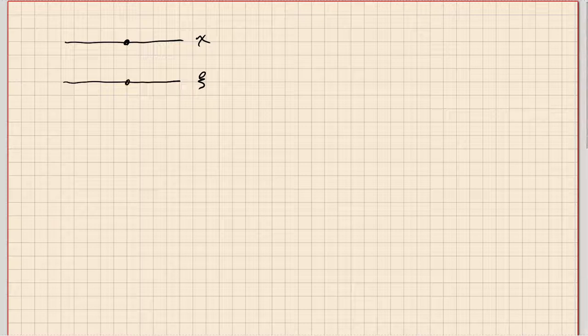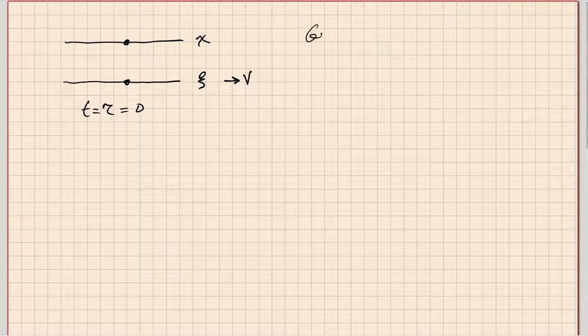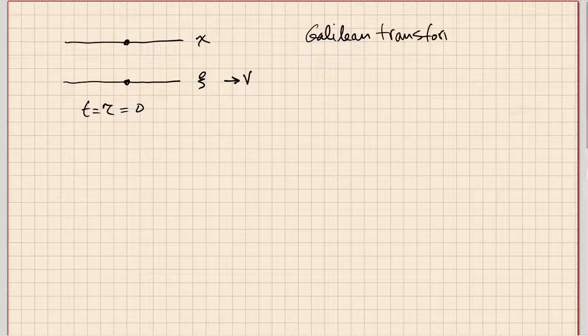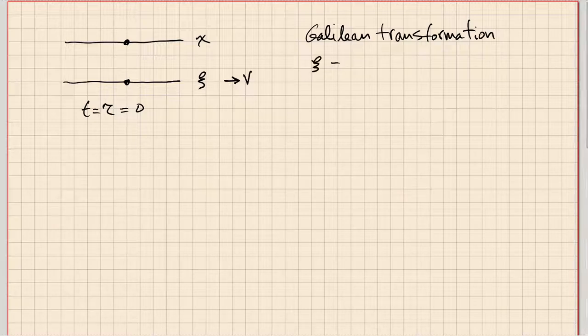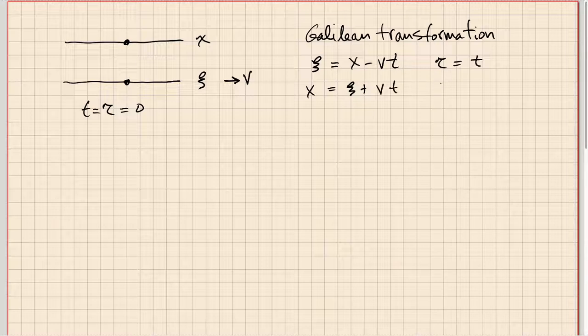Thinking about one dimension: here is the x-axis of one reference frame and the psi-axis of another, moving to the right with velocity v, where t equals tau equals zero. Looking at the Galilean transformation for this one coordinate: psi equals x minus vt, tau equals t, x equals psi plus vt, and t equals tau.